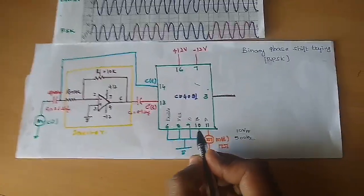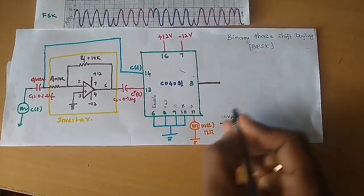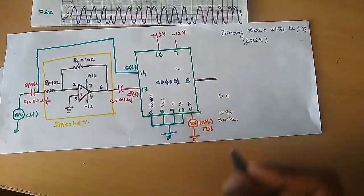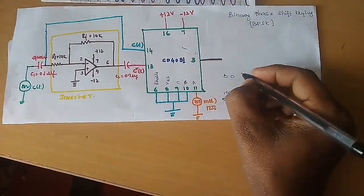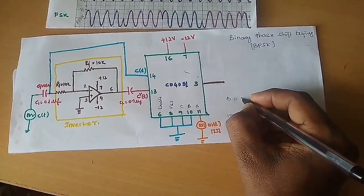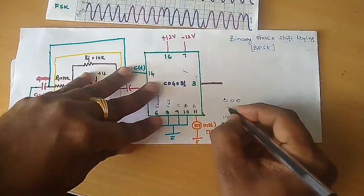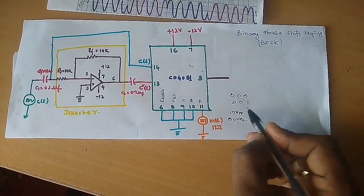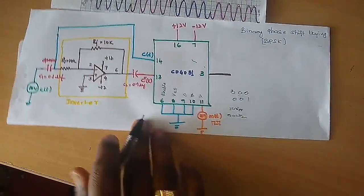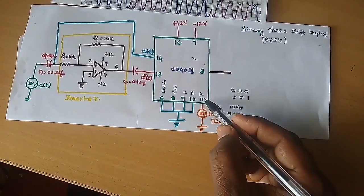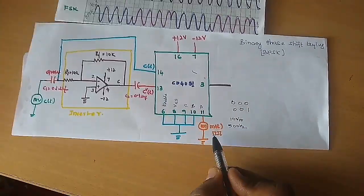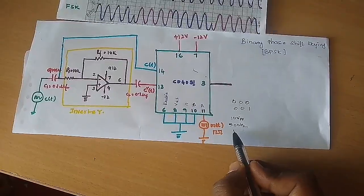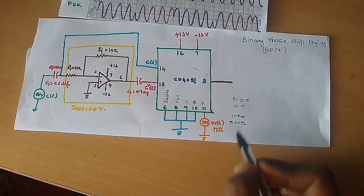The control selection inputs B and C must be set to 0, 0, and A can be varied between 1 and 0. So the combination is 0, 0, 0 or 0, 0, 1. Therefore, the selection line A, that is pin number 11, is connected to a message signal. It should be a square wave of around 500 Hz and 10 V peak to peak.